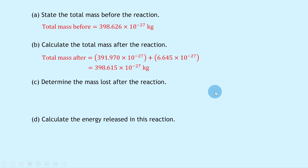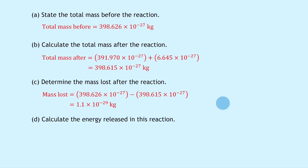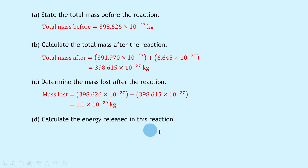Part c asks us to determine the mass lost. We take the total mass before minus the total mass after: 398.626×10⁻²⁷ minus 398.615×10⁻²⁷, giving 1.1×10⁻²⁹ kilograms. Make sure you're not rounding off any numbers at this stage — keep all digits in your masses, and be careful entering numbers into the calculator as it's easy to enter the wrong digit.